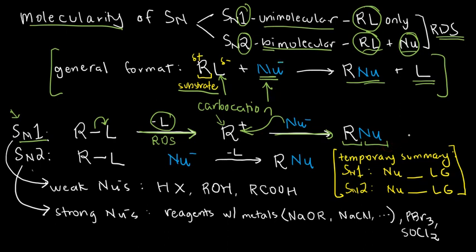So, if you're asked, how many steps are there in SN1, it's clear that we see here two steps. And if you're asked, which is the rate-determining step, that is the first step, the leaving of the leaving group.